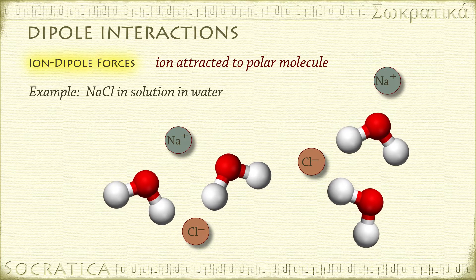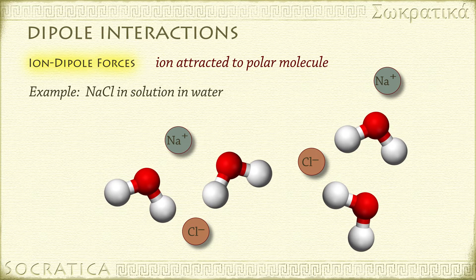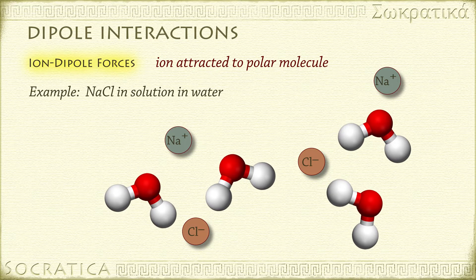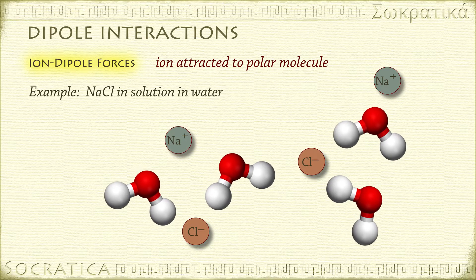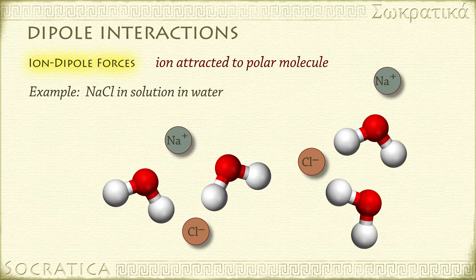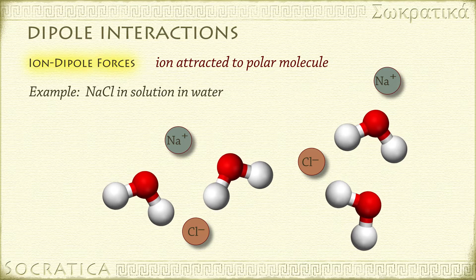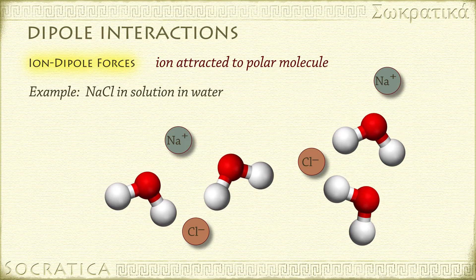So you can see the water molecules are oriented so the oxygens, with their partial negative charges, are pointed towards the Na+ ions, and the hydrogens are pointed away. Meanwhile, the positive end of the water molecule is oriented towards the negative chloride ion.